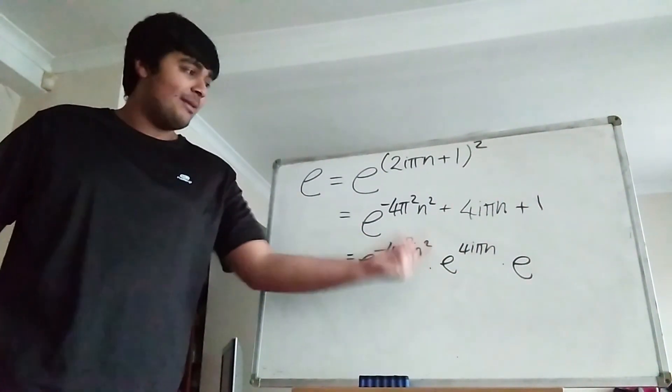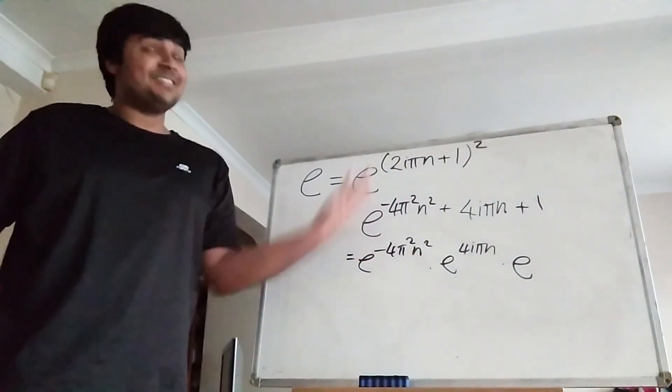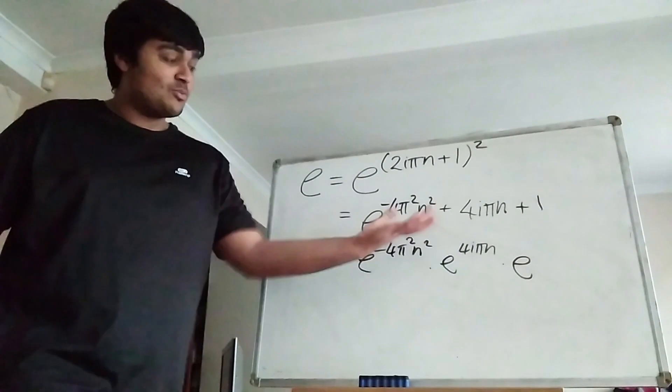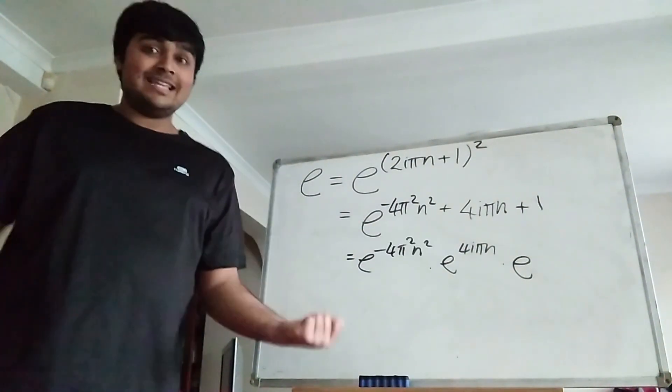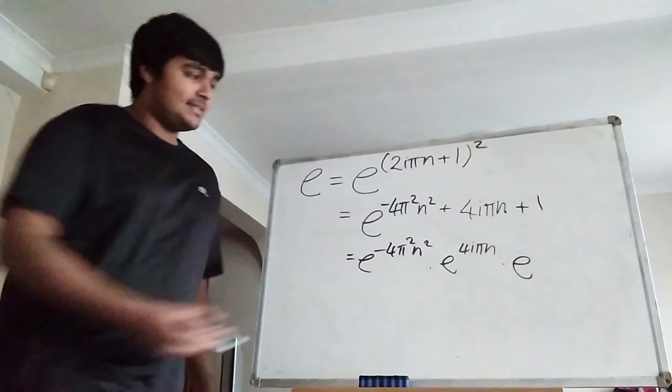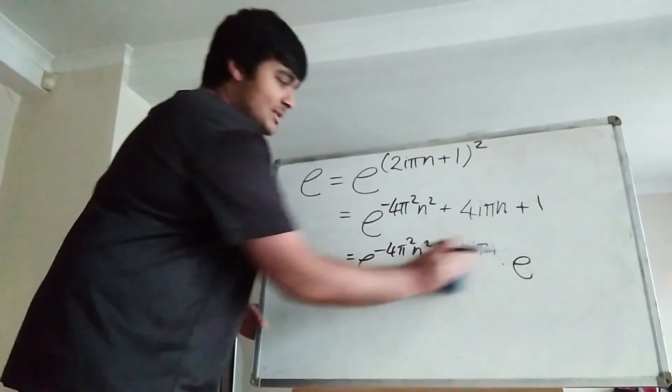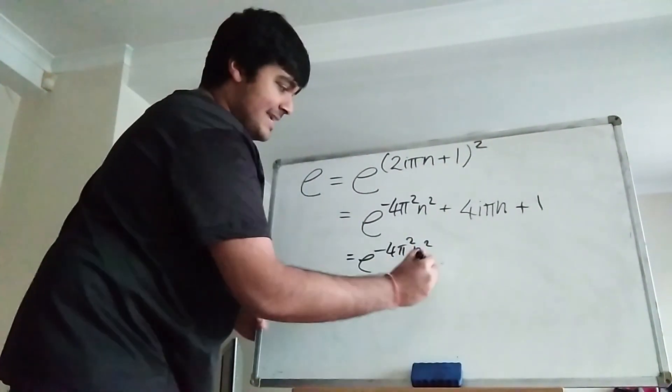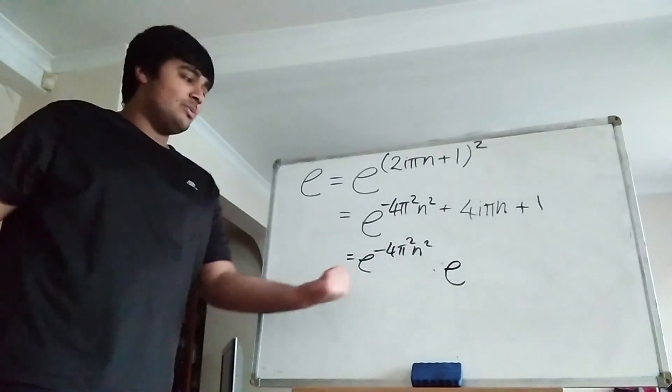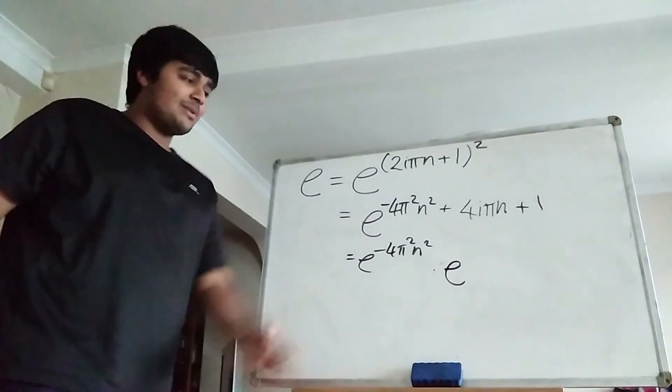But of course, e to the 4i pi n is just 1, because this thing here is just e to the 2i pi n all squared. So this thing here is just the same thing as multiplying by 1, so we can get rid of that and bring this e here.